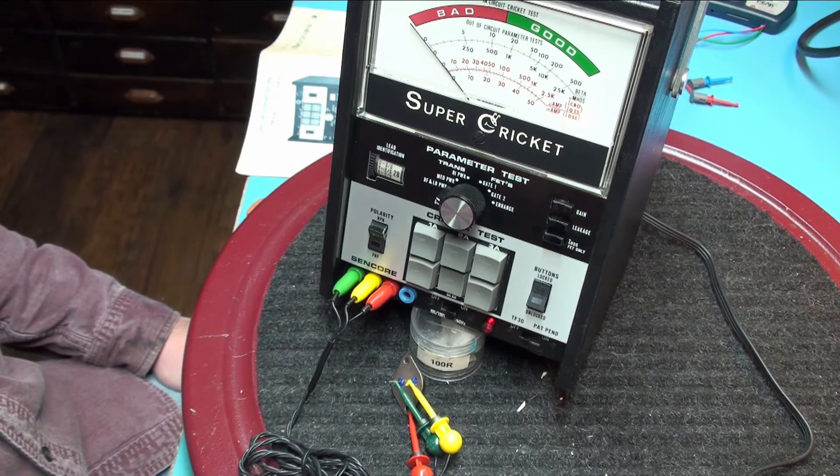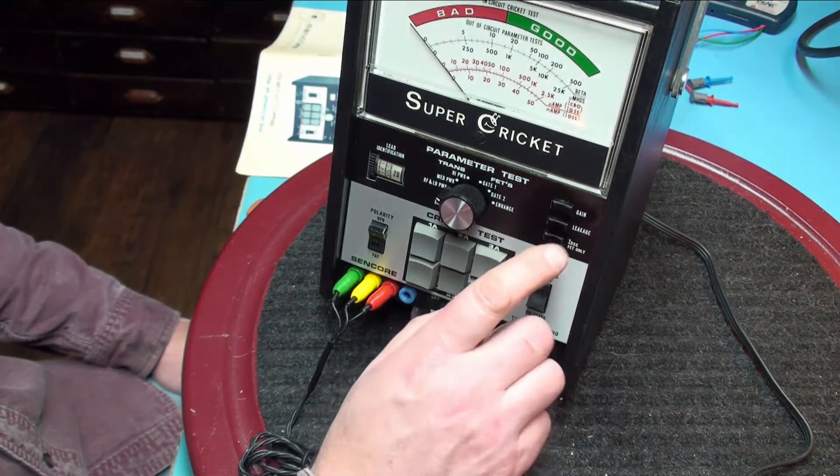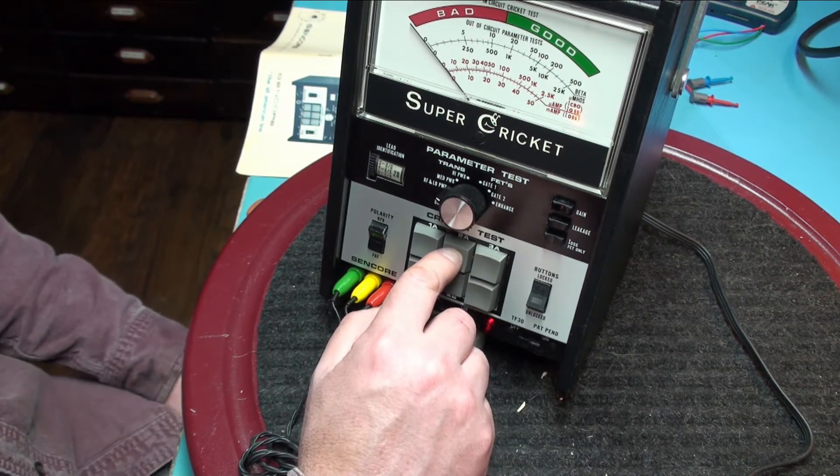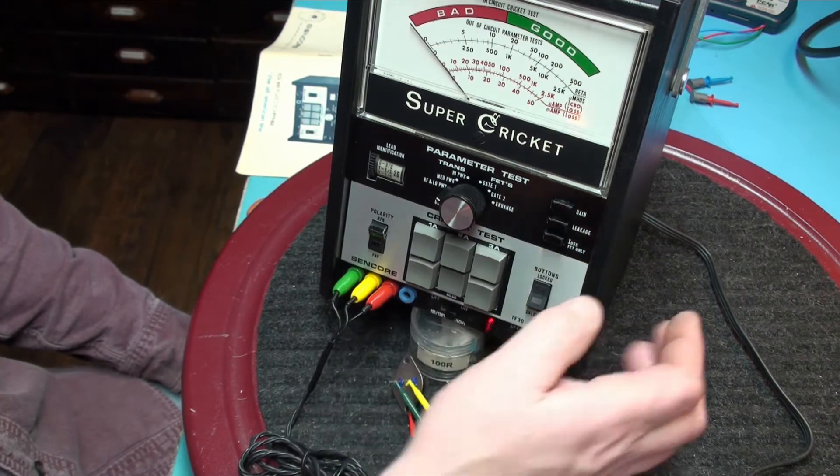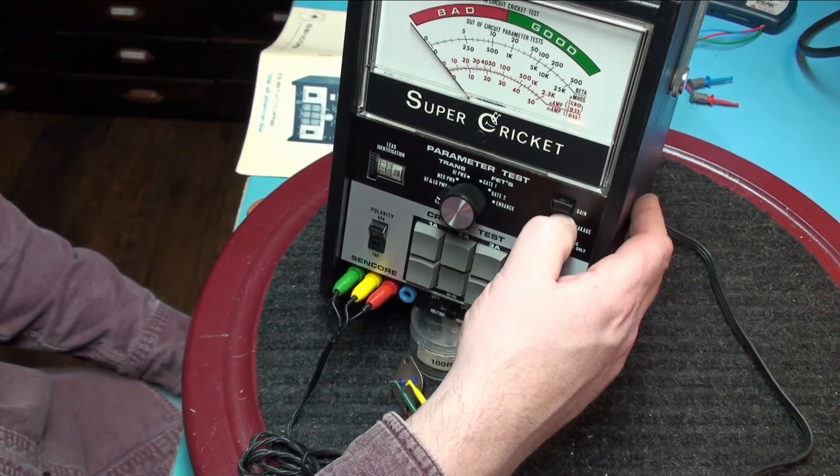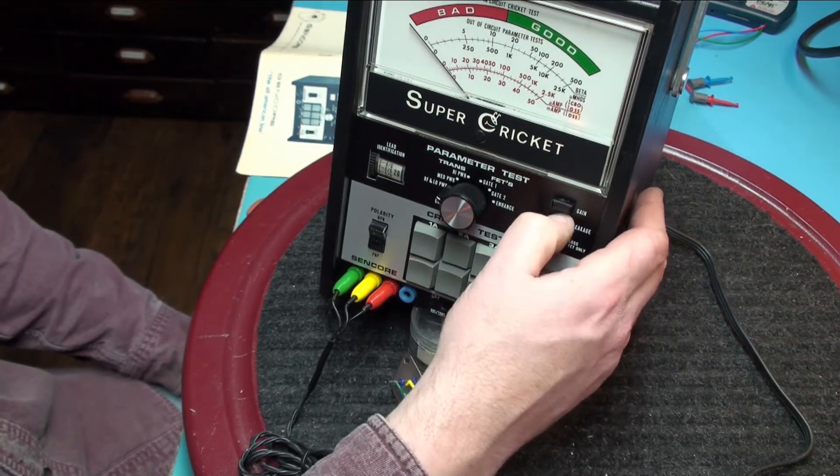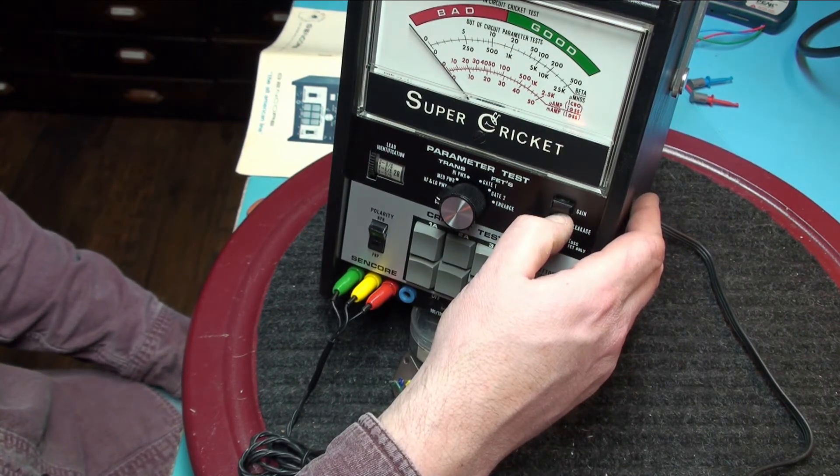To test for leakage it is basically the same test as gain. You are using the two buttons that indicated a good transistor. So right now we have 2B in and we are just going to hit leakage. We have no leakage on 2B and we have no leakage on 2A.